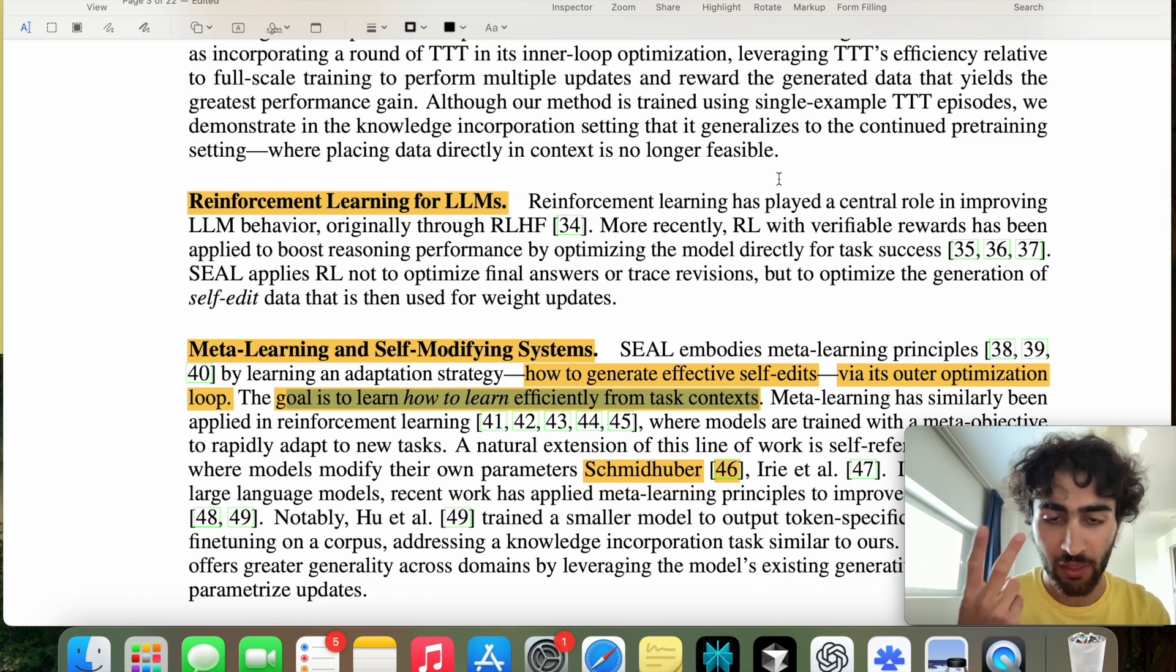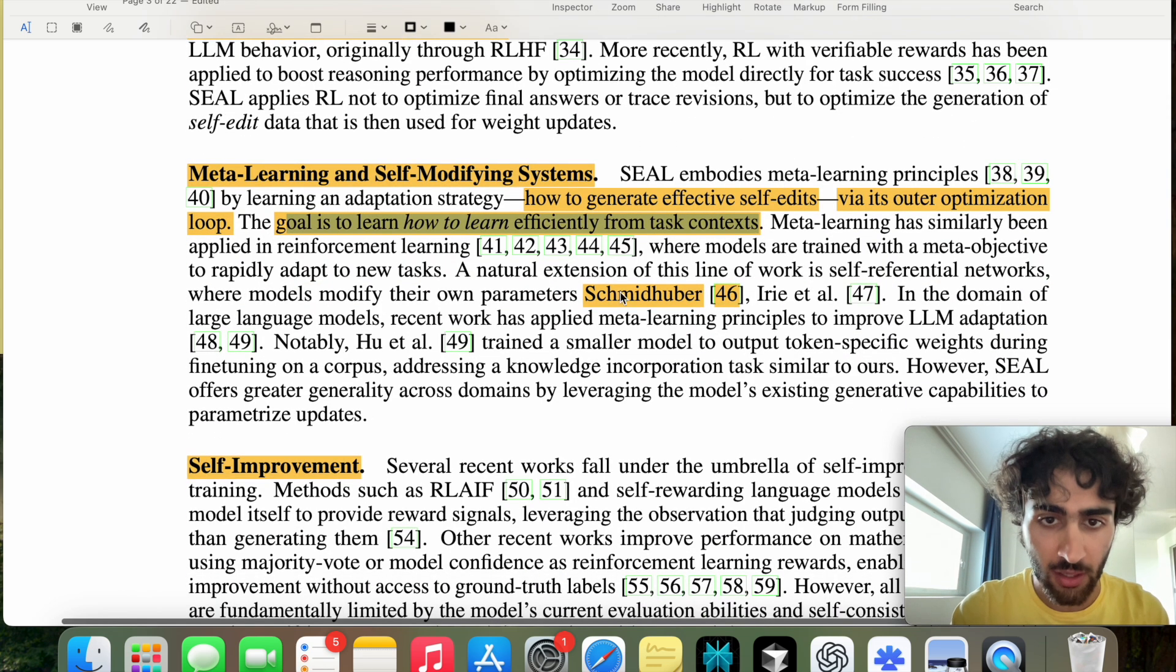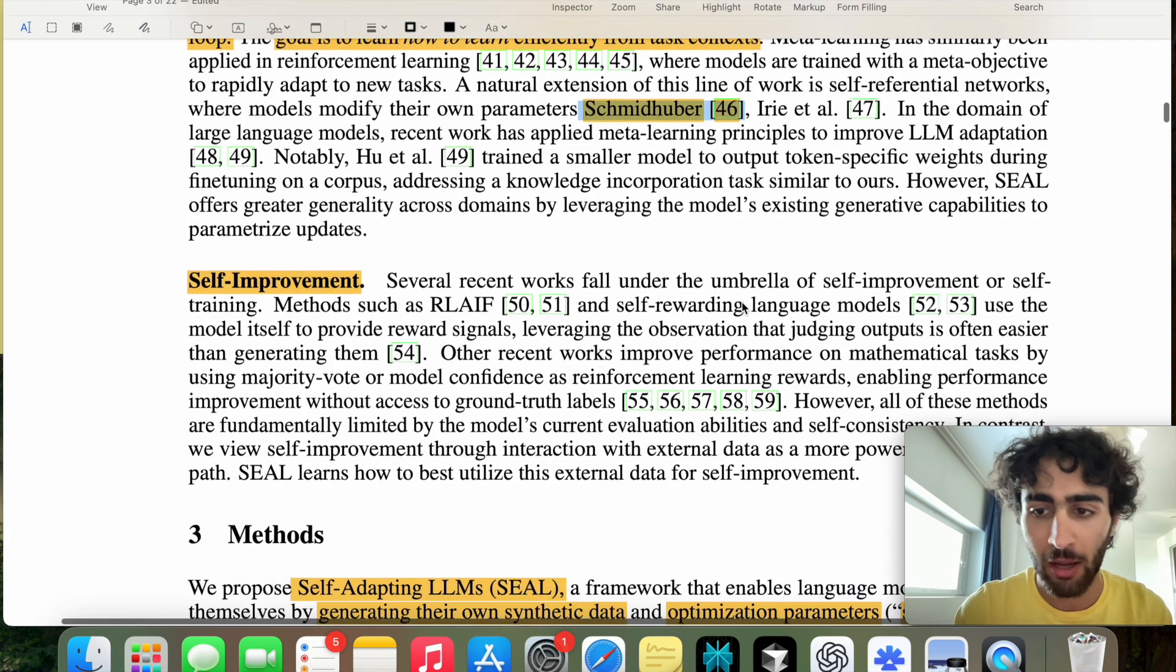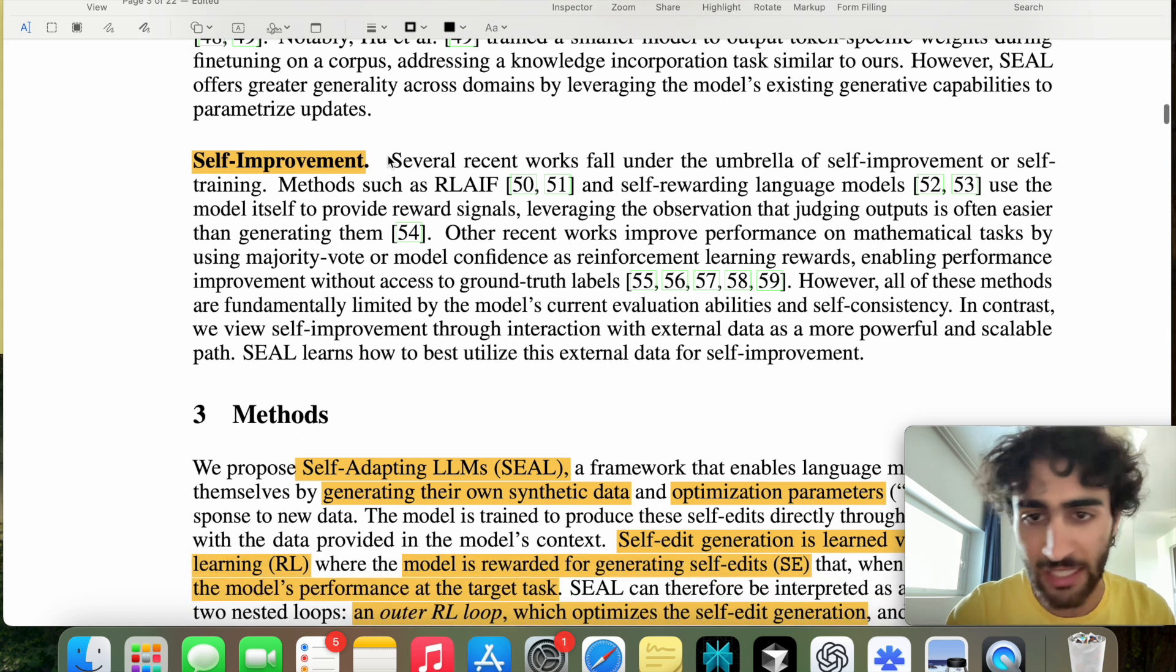So there's two loops within this process, and in the algorithm pseudocode, this is apparent. Then they talk about Schmidhuber, which is interesting. It has some relation to the Darwin-Godel machine, if I'm not mistaken, but this is not the focus of the paper, and then self-improvement.